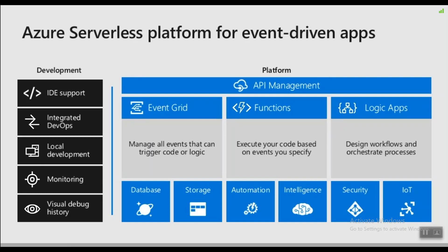Accompanying these components are Cosmos DB — our elastic-scale database in Azure — Azure Storage, Azure Automation, and the Intelligent Cognitive Services Suite that helps you do things like custom vision, computer vision, OCR, and text recognition. To help you secure your applications, we provide Azure AD and Azure IoT to help manage connected devices. For development, we also provide an integrated experience using tools such as Visual Studio, VS Code, Azure DevOps, and Application Insights for monitoring.